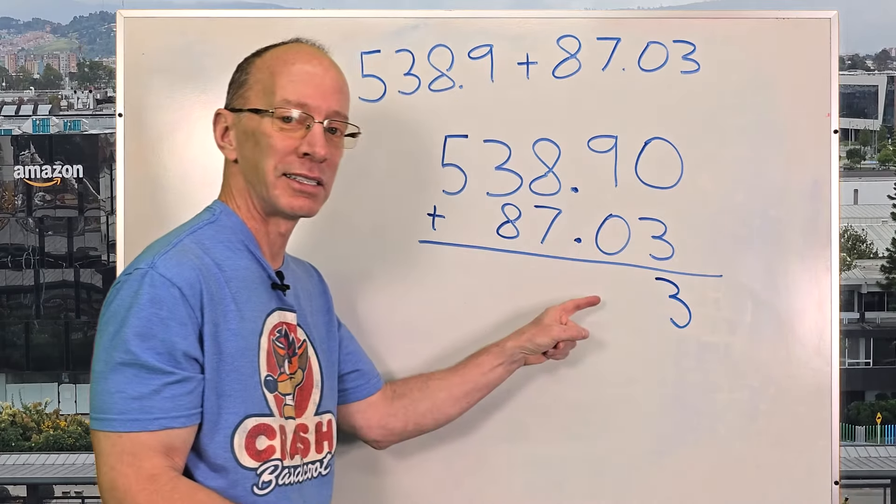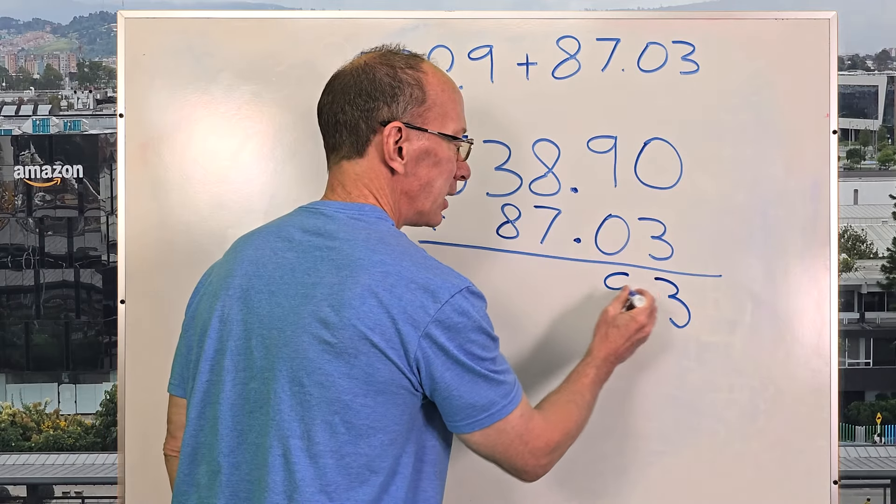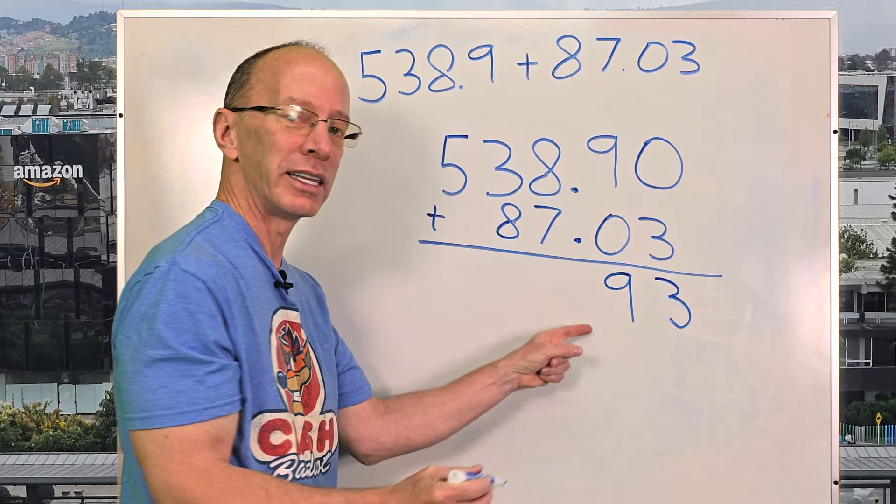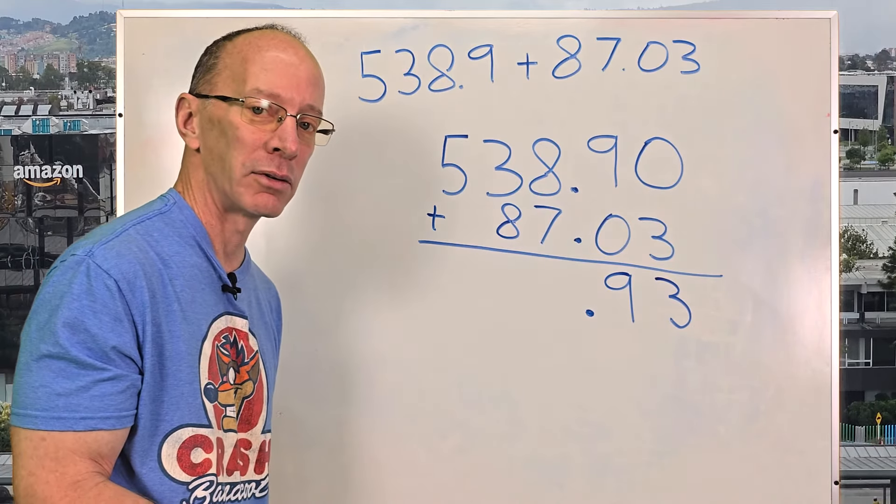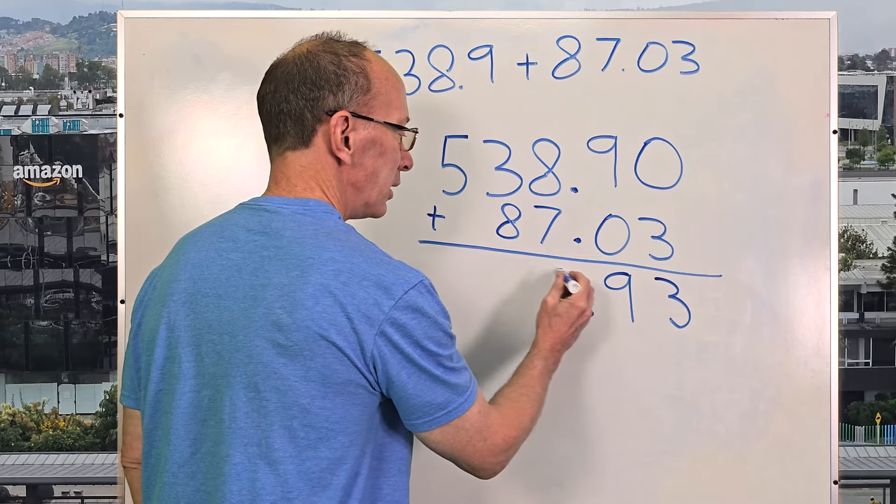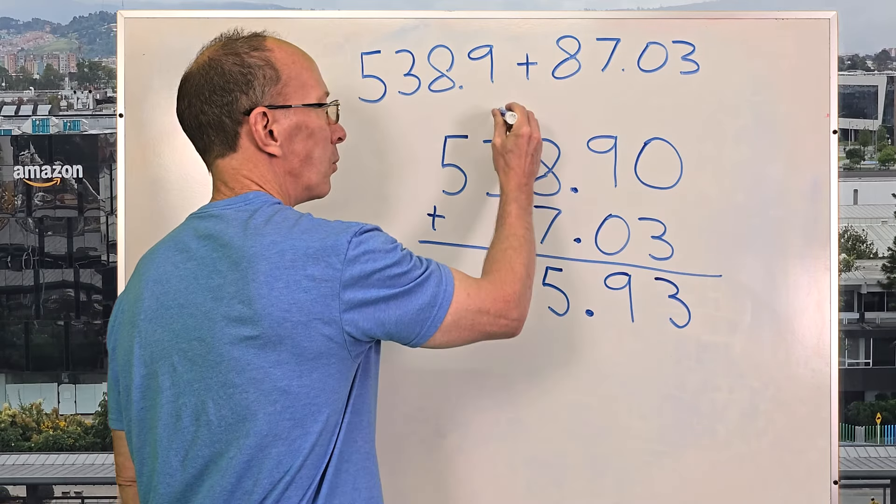And then nine plus zero is nine. And then put that decimal point in right here. And now I'm going to add eight plus seven equals 15. So I'm putting the five right here and carrying the one.